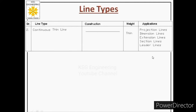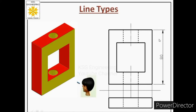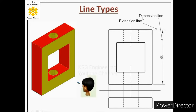The next applications are dimension lines and extension lines. After drawing different views of an object, we convey the size through dimensioning. For example, the height of the object is shown as 80 millimeters. In order to place any dimension, we use two types of lines: extension lines and dimension lines. Whenever we draw these two lines during dimensioning, they must be drawn as continuous thin lines.